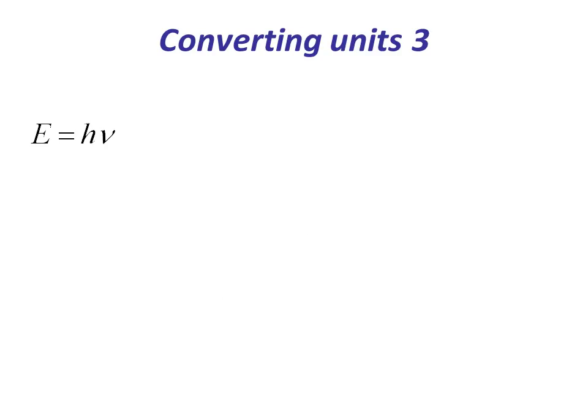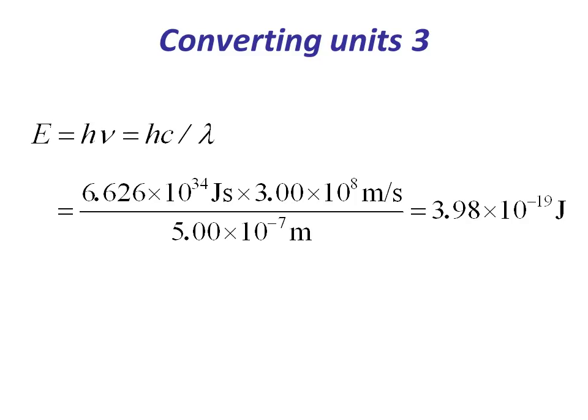To finish up, I'll show you how to calculate the energy in kilojoules per mole of light that has a wavelength of 500 nanometers. We know that energy equals Planck's constant multiplied by the frequency, so we can substitute in our equation for the frequency to get an expression for the energy in terms of the wavelength, the speed of light, and Planck's constant. Substituting values into this formula then tells us that 500 nanometers light has an energy of 3.98 times 10 to the minus 19 joules.